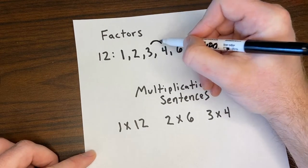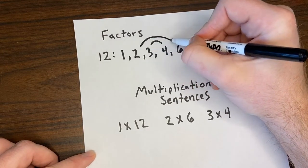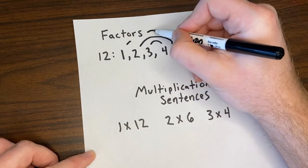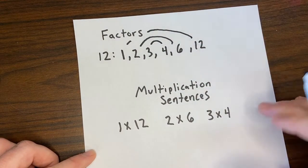Now you can see I've made my factor rainbow with my pairs, 3 and 4, 2 and 6, 1 and 12, and there's all my factors of 12.